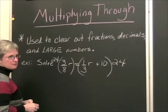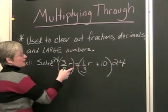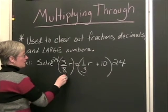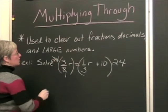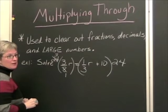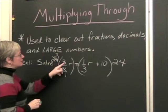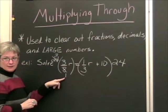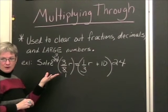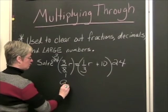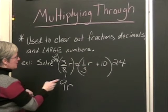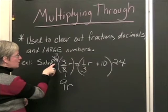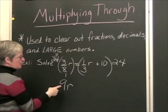If we take 24 times three-eighths r, the eight will go into eight once and the eight will go into 24 three times. Then we'll have three times three times r, all over one. Multiplying by 24 will turn the left side of this equation into just plain old nine r.